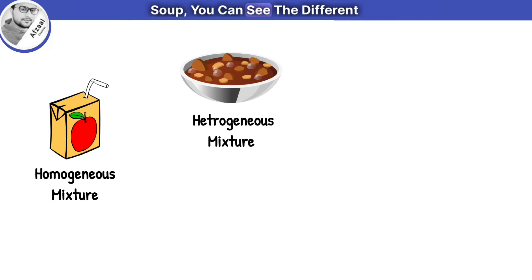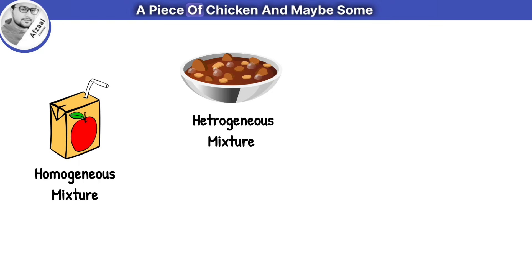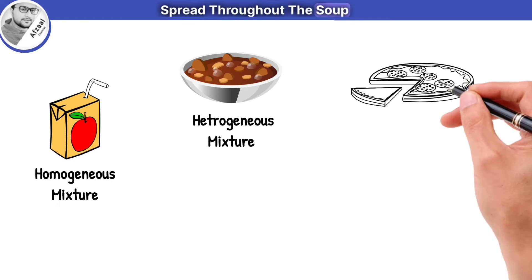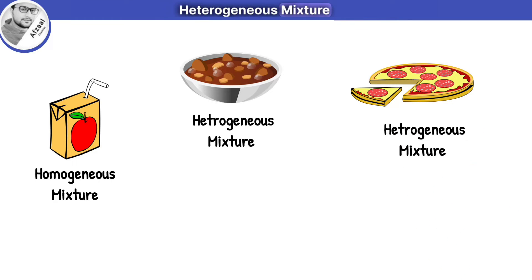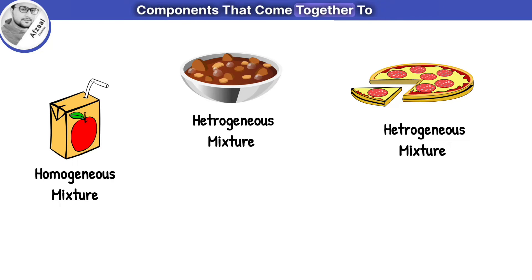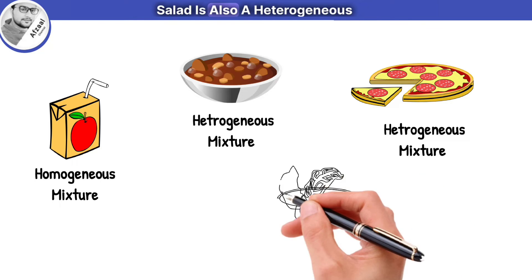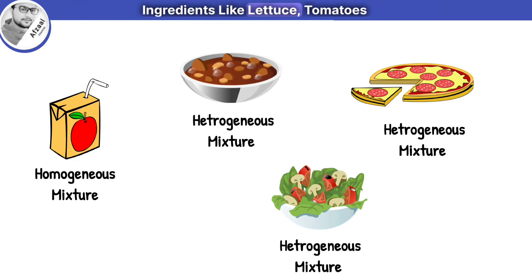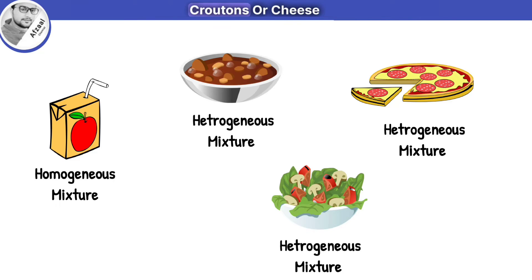Soup is a heterogeneous mixture because when you take a spoonful of soup, you can see the different components in it — like a chunk of carrot, a piece of chicken, and maybe some noodles. These ingredients are not uniformly spread throughout the soup. Pizza is a perfect example of a heterogeneous mixture — it's made up of different visible components that come together to create a mouth-watering experience. Salad is also a heterogeneous mixture because we have different ingredients like lettuce, tomatoes, cucumbers, and maybe even some croutons or cheese.